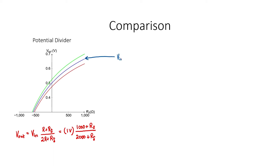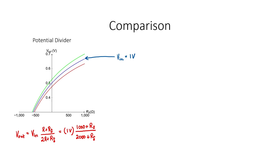First, take a look at the blue line — this represents the situation when the power supply is at 1 volt. If R_delta equals zero, we should measure 0.5 volts at the output. As R_delta increases or decreases, we'll see a change in the output voltage. The two other curves represent the situation when we have a problem with our input voltage — for example, if the power supply voltage is noisy, unstable, or not accurately known. The green curve represents an input voltage 5% higher than expected, and the red curve represents an input voltage 5% lower than expected.